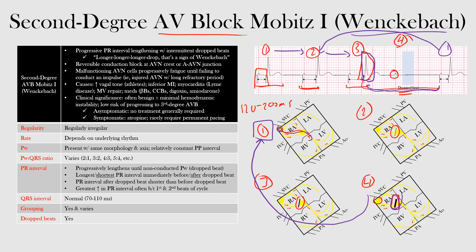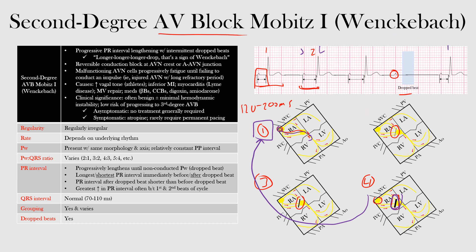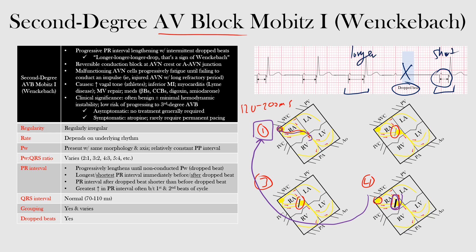A quick way to confirm you are dealing with Mobitz type 1 is to look at the PR intervals both before and after the dropped beats. The PR interval after the dropped beat should always be shorter than the PR interval before the dropped beat. After the dropped beat, there has been enough time to recover and return to stage one, where the AV node allows normal conduction — and that is why it is shorter.